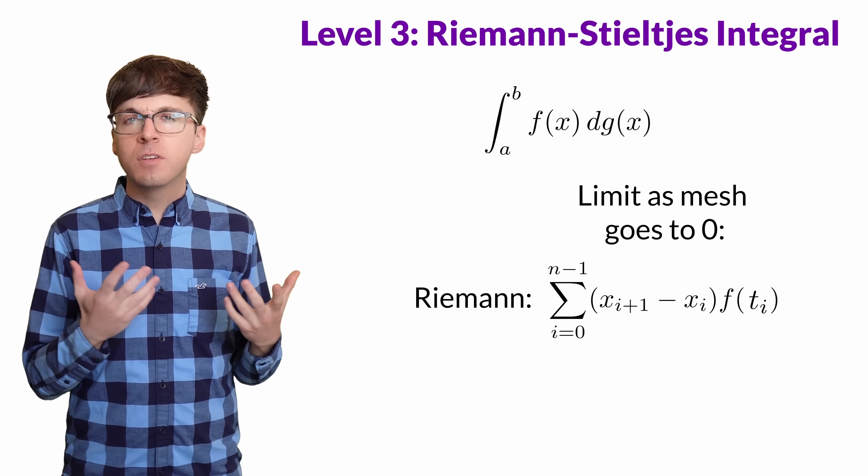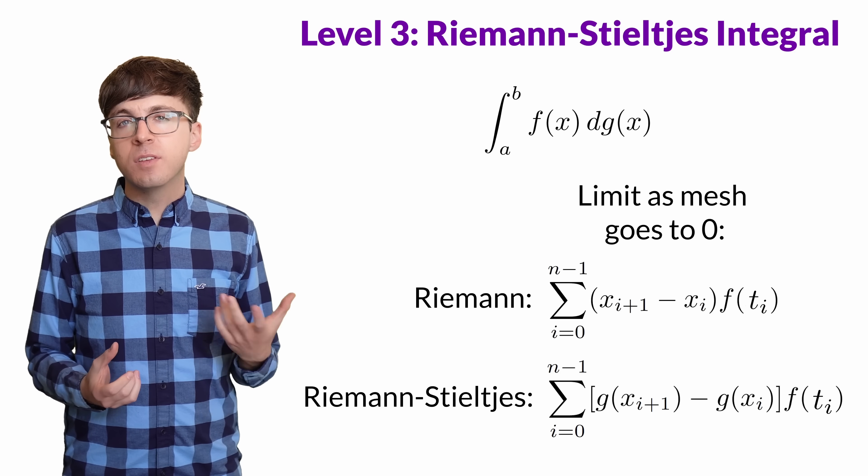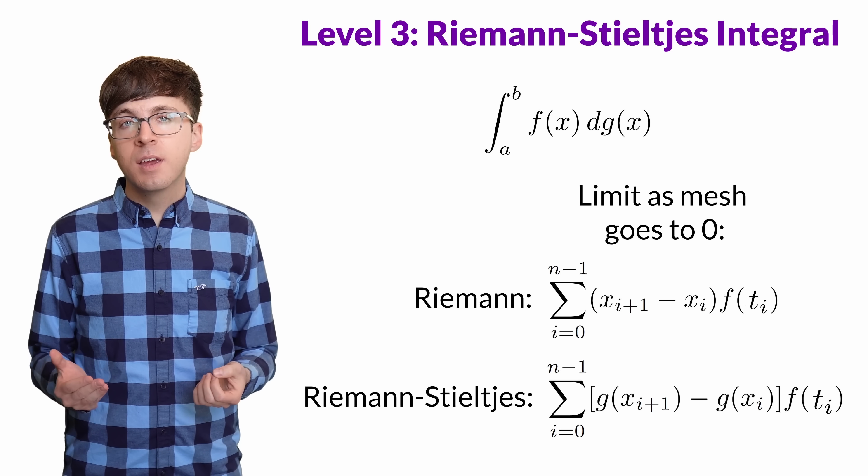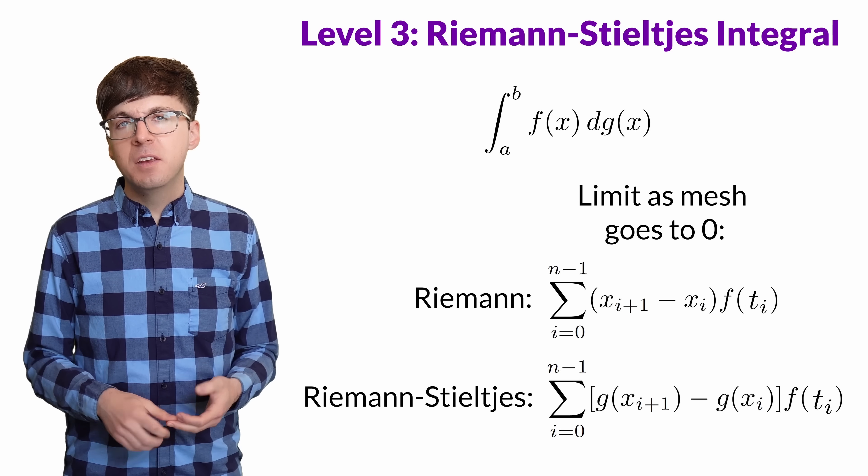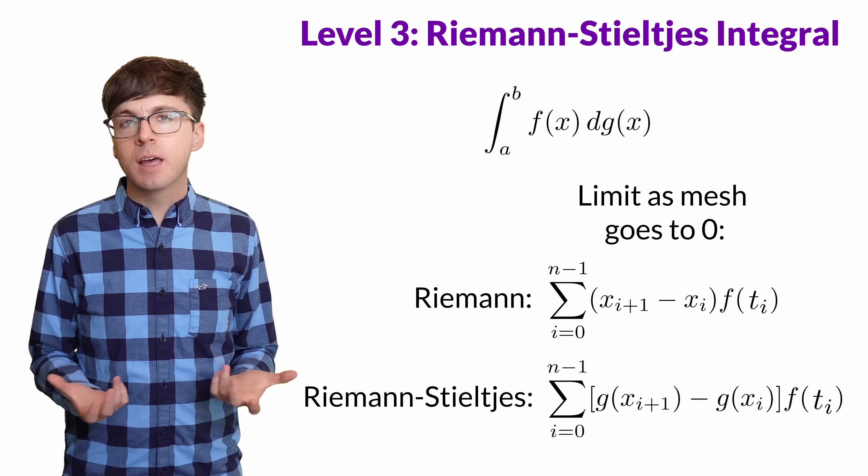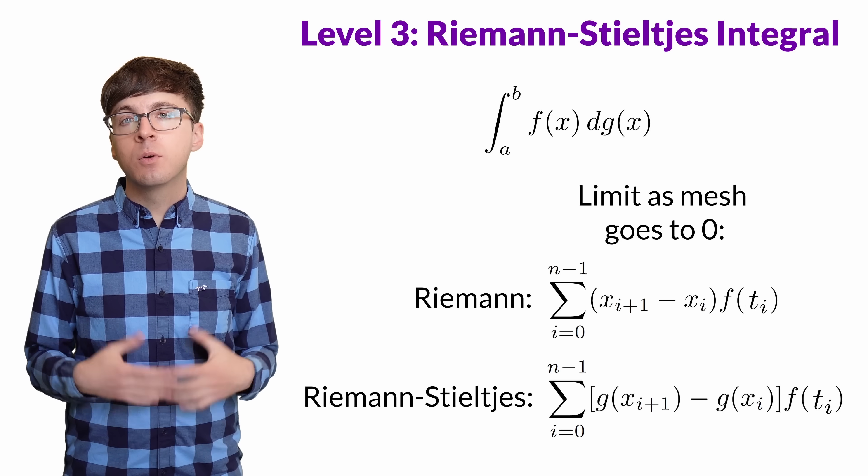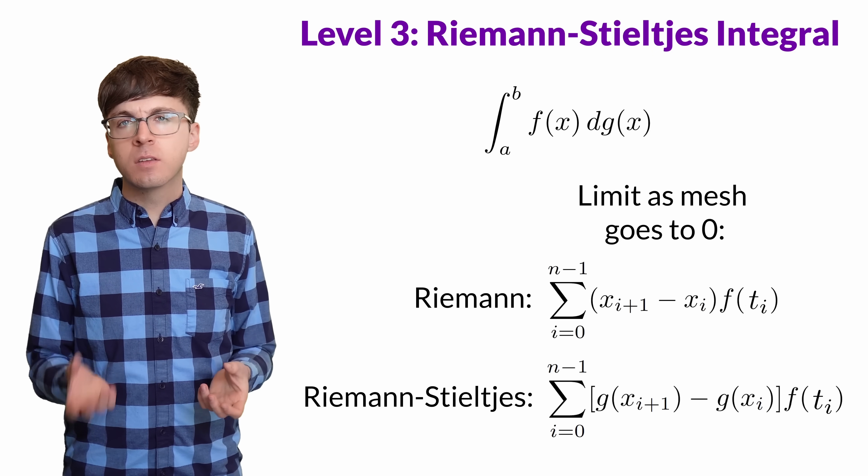Here's the definition for the Riemann integral. To get the Riemann-Stieltjes integral, all we need to change is x_i+1 minus x_i to be g(x_i+1) minus g(x_i). Since g is non-decreasing, this still makes sense as a sort of length. And then we take the limit as the mesh goes to zero, just like before.